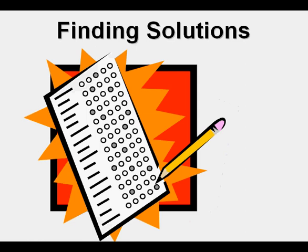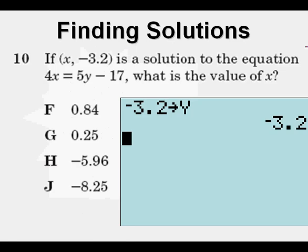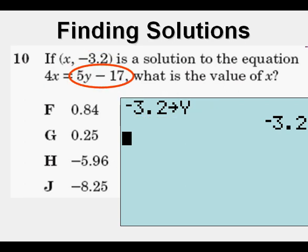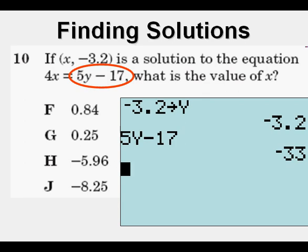Our first problem: if (x, -3.2) is a solution to the equation 4x = 5y - 17, what is the value of x? We store -3.2 for y, then enter the expression on the right side, 5y - 17, and find that it gives us a value of negative 33.